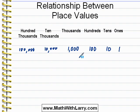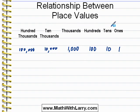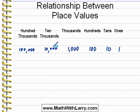Now the key thing to take away from this lesson is that we use a base ten math system. What that means is that as we move to the left in our place value chart, each place value is ten times as big as the place value on the right. In other words, ten is ten times as big as one. Ten thousand is ten times as big as one thousand.